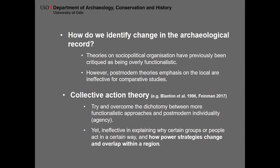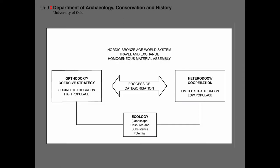Collective action theory tries to overcome the dichotomy between more functionalistic approaches and more post-modernistic agency. But this theory has also been critiqued for its ineffectiveness in explaining why certain groups act in a certain way and how power strategies change and overlap within a region. I've tried to work around this by implementing Patrick Barth's classic idea of processes of categorization — the point being that over-regionally the entire coast is circumscribed within a homogeneous material assembly, but there are still quite different levels of social political organization, shown through two extremes: coercive strategies or cooperative strategies.